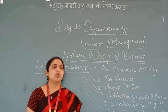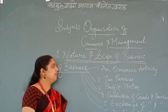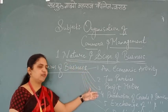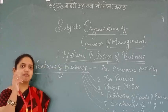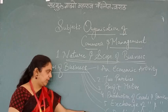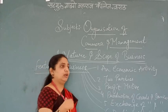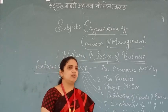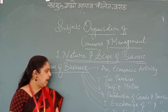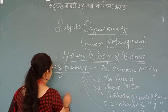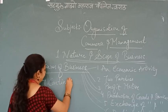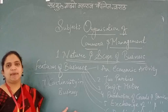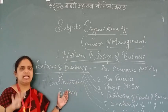Every time you have to relate and understand these points. That was point number six. In total there are 10 points in the features of business. We started with: first — economic activity, second — two parties, third — profit motive, fourth — production of goods and services, fifth — exchange of goods and services, and sixth — dealing in goods and services. The remaining four points, including continuity in business, we will continue in the next lecture. Six points have been taught today and four points are left.